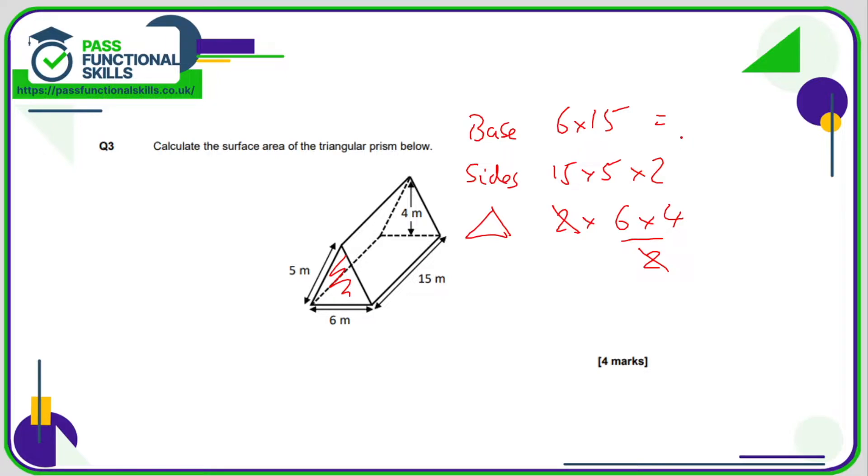6 lots of 15 comes to 90, 15 times by 5 times by 2 comes to 150, and 6 times 4 is 24, or 2 times 6 times 4 divided by 2 it still comes to 24. So all we need to do is just add these three things together and we get a total of 264.